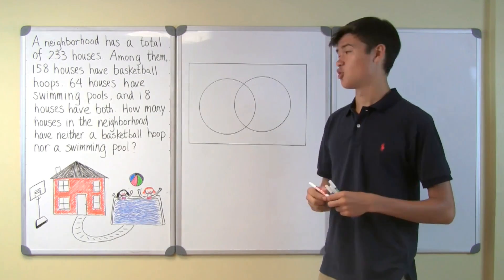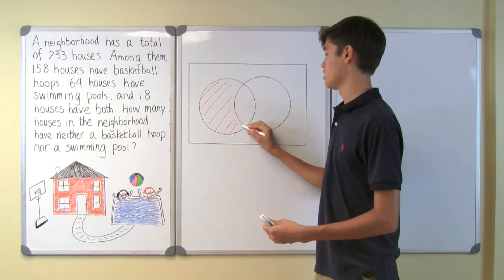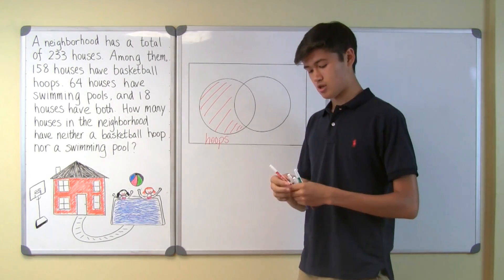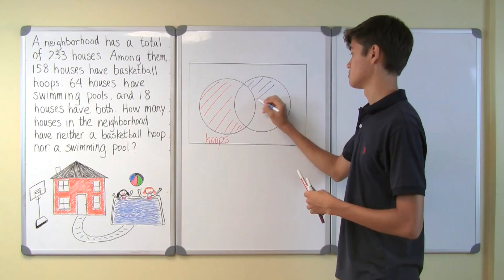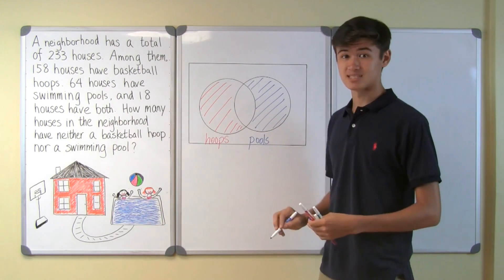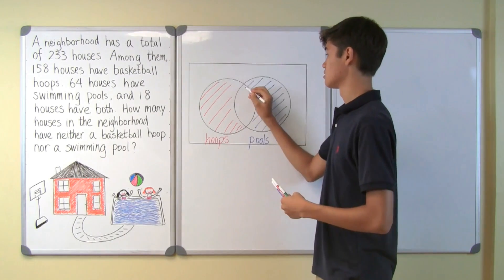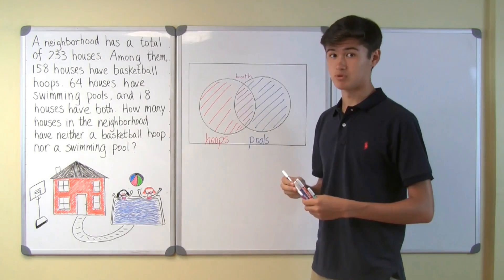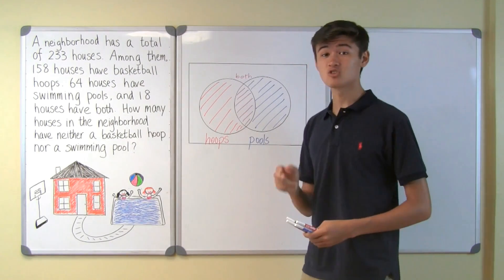The red region will represent houses with basketball hoops but no swimming pools. The blue region will represent houses with swimming pools but no basketball hoops. Next, the purple region will represent all houses with both basketball hoops and swimming pools. Finally, the green region will represent houses with neither basketball hoops nor swimming pools. And this is the region we are solving for.